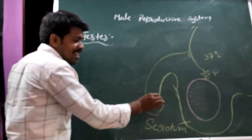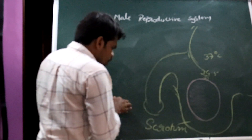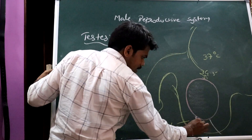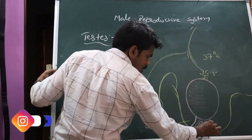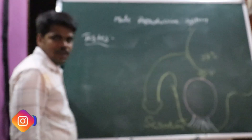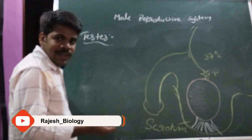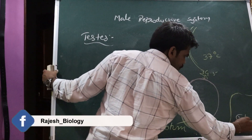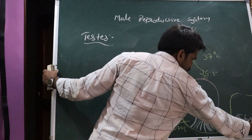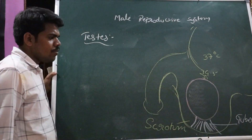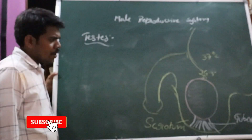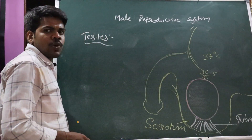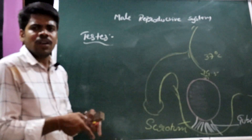Now, how are the testes held in position? The testes are attached to the bottom of the scrotal sac with a fibrous cord. This fibrous cord helps to maintain the testes within the scrotal sac and is called the gubernaculum.